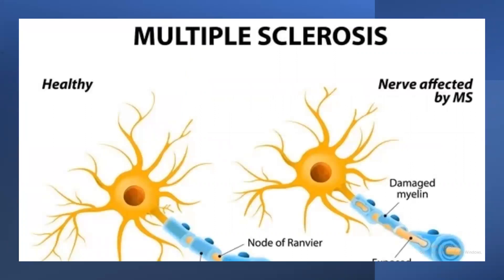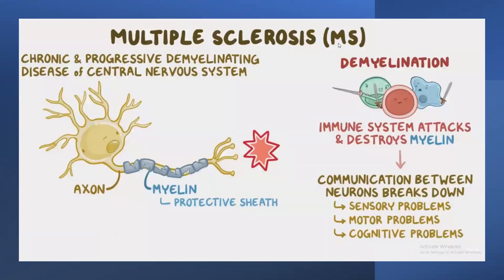Next is multiple sclerosis. In multiple sclerosis, the neuron is affected — specifically the myelin sheath is damaged. Multiple sclerosis is a chronic and progressive demyelinating disease of the central nervous system. The myelin, which is a protective sheath around the nerve axon, is destroyed. The immune system attacks and destroys the myelin, causing a breakdown in communication between neurons.